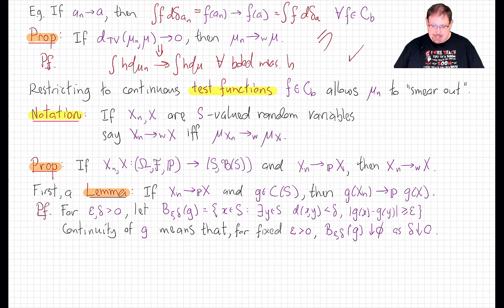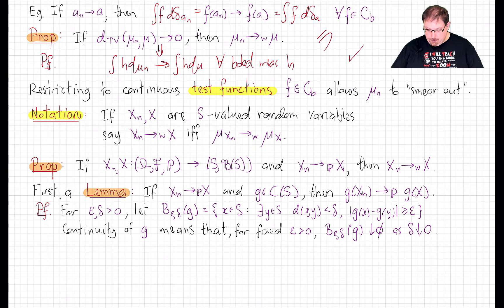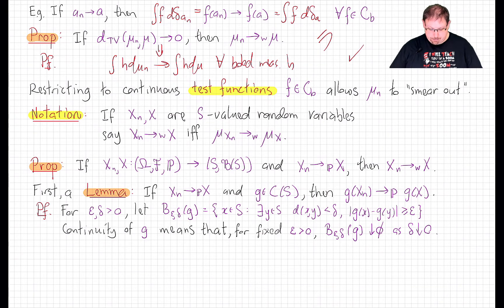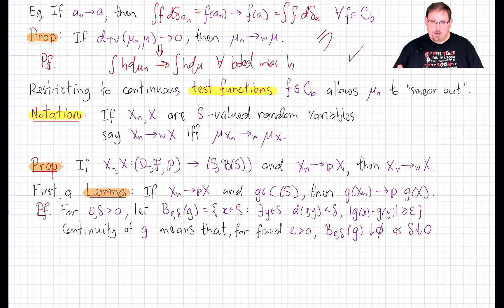Fix any positive epsilon and delta. We look at the following kind of variant of the modulus of continuity of g. B(epsilon, delta, g) consists of all points x in the domain for which there is some nearby point y, delta-nearby in particular, that gets mapped by g far away from g(x) — that is, the distance between g(x) and g(y) is bigger than epsilon. Continuity of g is precisely the statement that for any fixed epsilon, this set of nearby points that get thrown far away decreases to the empty set as delta goes to zero.